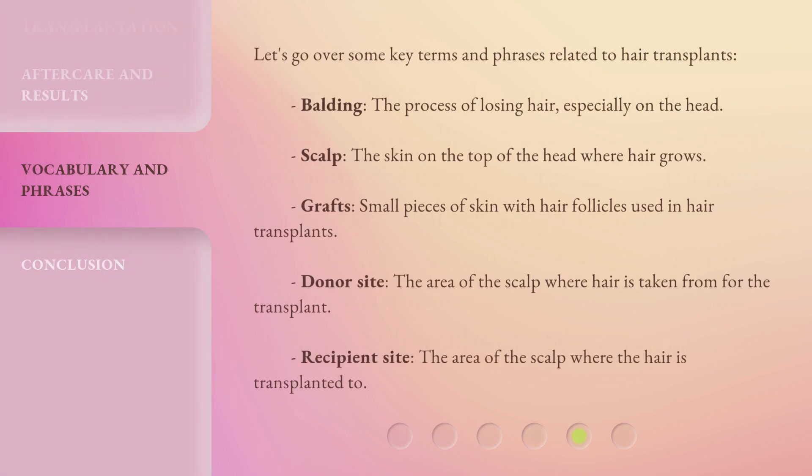Let's go over some key terms and phrases related to hair transplants. Balding: the process of losing hair, especially on the head. Scalp: the skin on the top of the head where hair grows. Grafts: small pieces of skin with hair follicles used in hair transplants. Donor site: the area of the scalp where hair is taken from for the transplant. Recipient site: the area of the scalp where the hair is transplanted to.